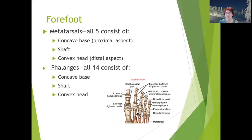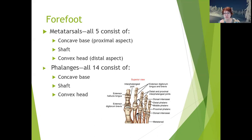The forefoot consists of the metatarsals and phalanges. All five metatarsals have a concave base at the proximal aspect, a shaft, and a convex head at the distal aspect — the metatarsal heads are your toe knuckles, or on the plantar aspect, the balls of your feet; when you come up on your tiptoes, you're resting on your metatarsal heads. There are 14 phalanges: two in the first digit and three in each of the other four. All phalanges have a concave base, shaft, and convex head, making them long bones despite their small size.